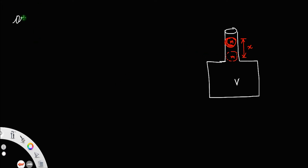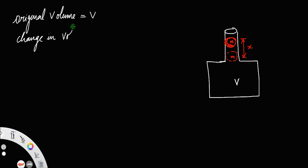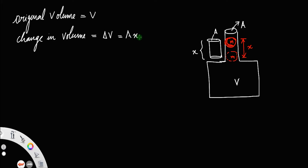We have the original volume of the air chamber equal to V. The change in volume is equal to delta V. If A is the cross-sectional area and the length displaced is x, this small cylinder — the portion of the neck up to this length — has cross-section A and length x. This is the change in volume, so it will be A times x.